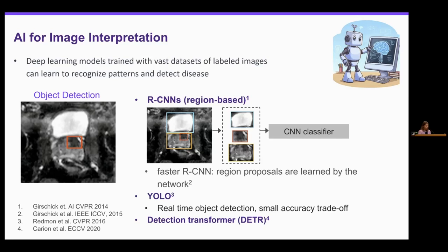Faster RCNN is still not real-time. For real-time object detection, YOLO is probably the most common architecture. However, you do probably take a small accuracy hit, especially with smaller objects. And transformers have made an appearance for this task as well.